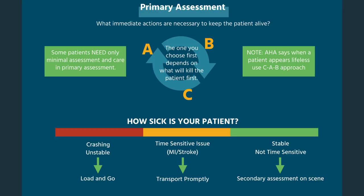Remember, the AHA says when a patient appears lifeless, use a CAB approach. That's important on the street and also for the national registry exam — the national registry pays attention to heart association guidelines and you will get questions on this. For the lifeless patient, you walk up and get a feeling — they're not moving, their color might be bad, their chest isn't moving. So we go to the CAB approach: check the pulse first and look for respirations at the same time.